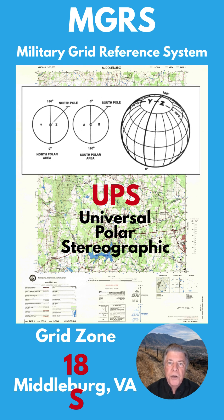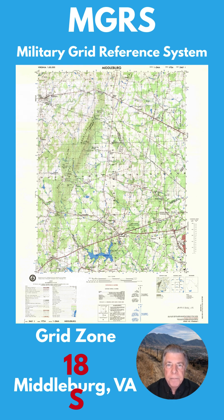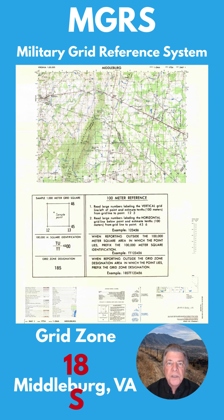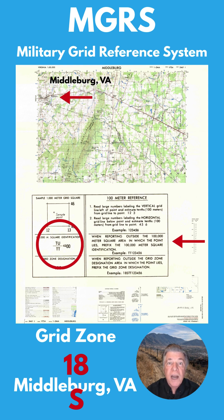The first part of the MGRS is the grid zone designation. The second part is the 100,000-meter square ID. Each UTM is divided further into 100,000-meter rectangles. These consist of a column letter and a row letter, both using A through Z, both omitting I and O. For the Middleburg VA map, you can see it splits between TU and TT. Since the city of Middleburg is north of our line, we'll use designation TU.